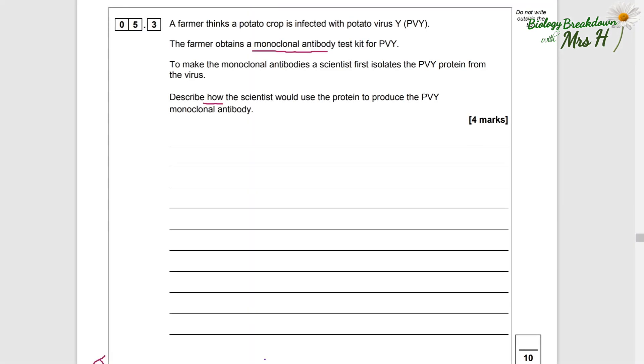Question 5.3: A farmer thinks a potato crop is infected with potato virus Y (PVY). The farmer obtains a monoclonal antibody test kit for PVY. To make the monoclonal antibodies, a scientist first isolates the PVY protein from the virus. Describe how the scientist would use the protein to produce the PVY monoclonal antibody. Before we answer the question, I thought we'd do a quick recap as to how we actually make monoclonal antibodies.